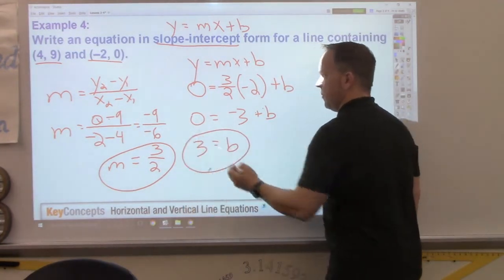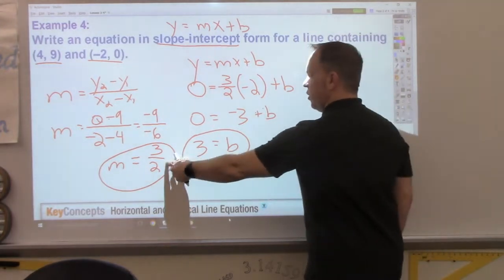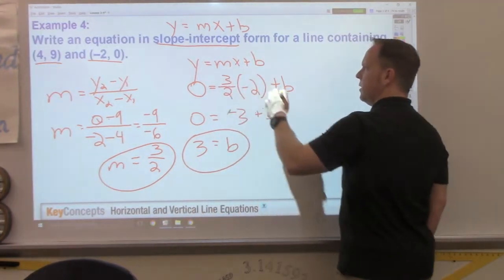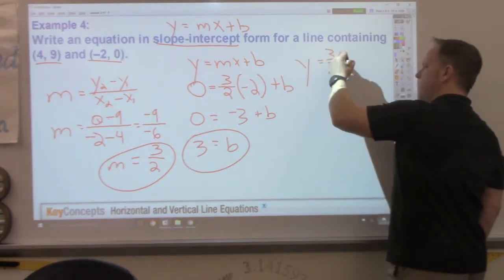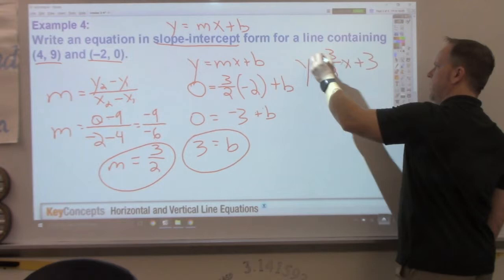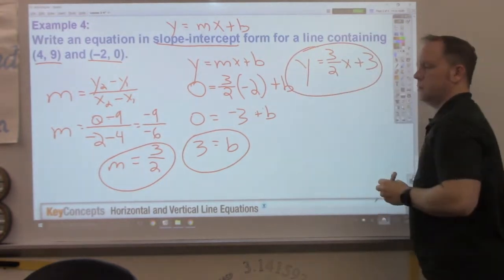Now, I have my y-intercept. Last step. Plug your slope and your y-intercept into this formula and be done. y equals 3 over 2x plus 3. Finished.